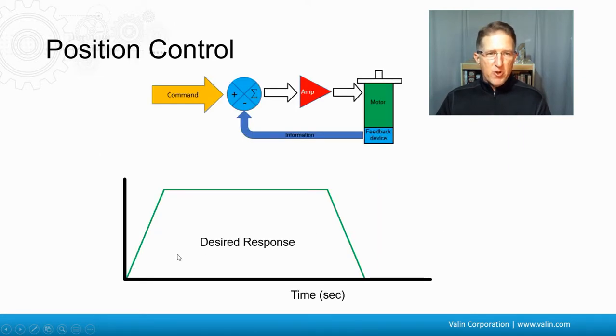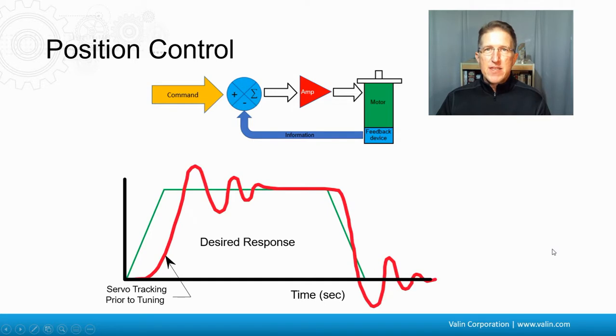All right, so let's take a look at position control. If this is a constant velocity here on the top of this trapezoid, here's the acceleration. It ramps up, and then it decelerates down. So over time, this is the desired response. And maybe this is representative of the actual response. But this is before tuning.